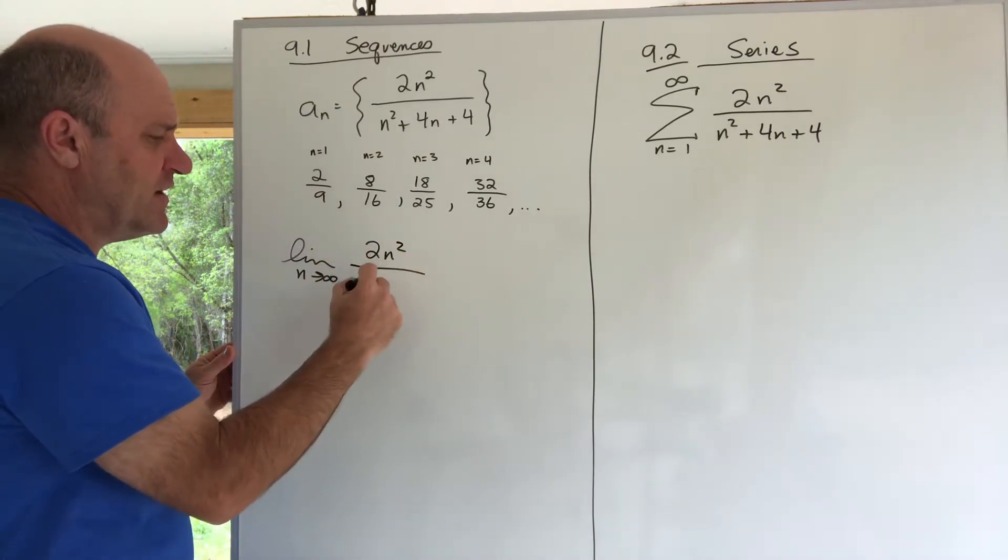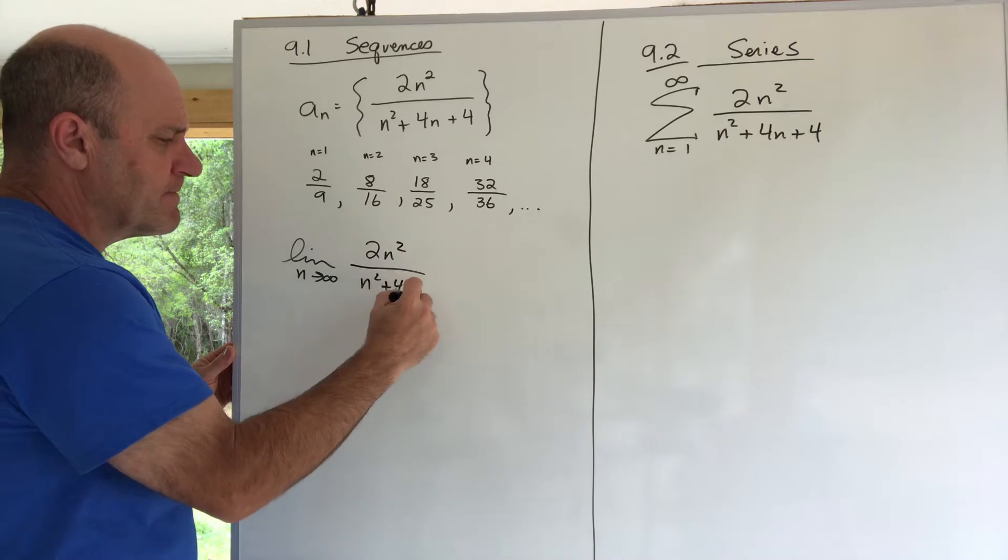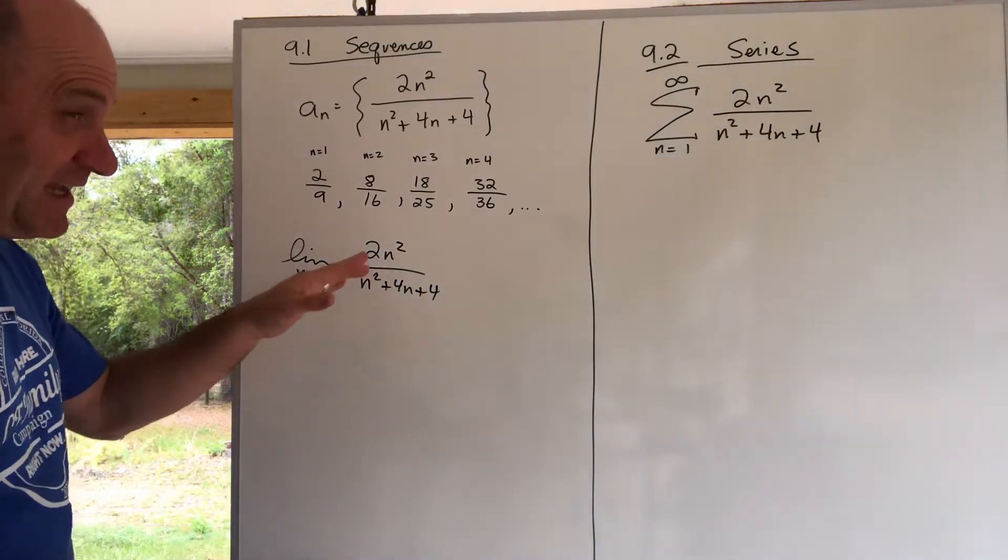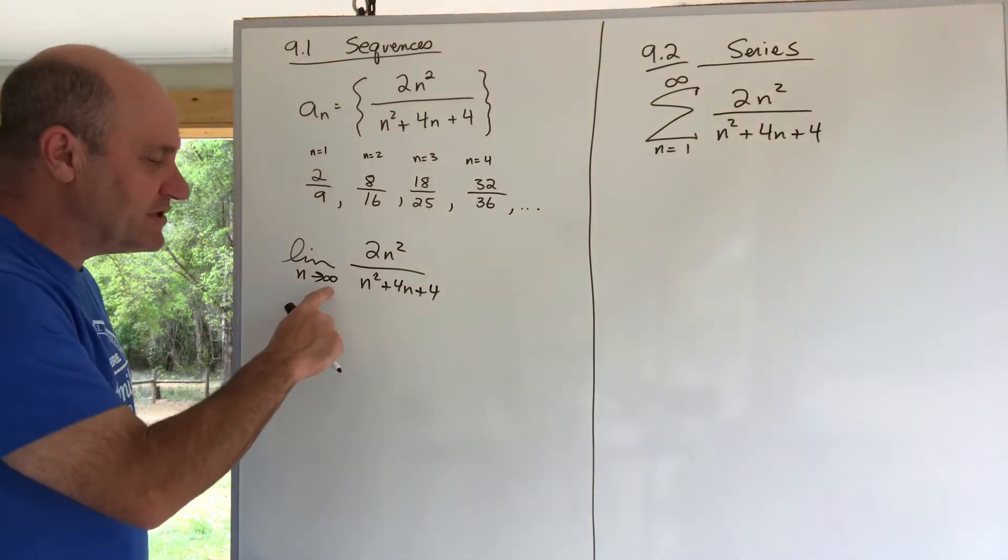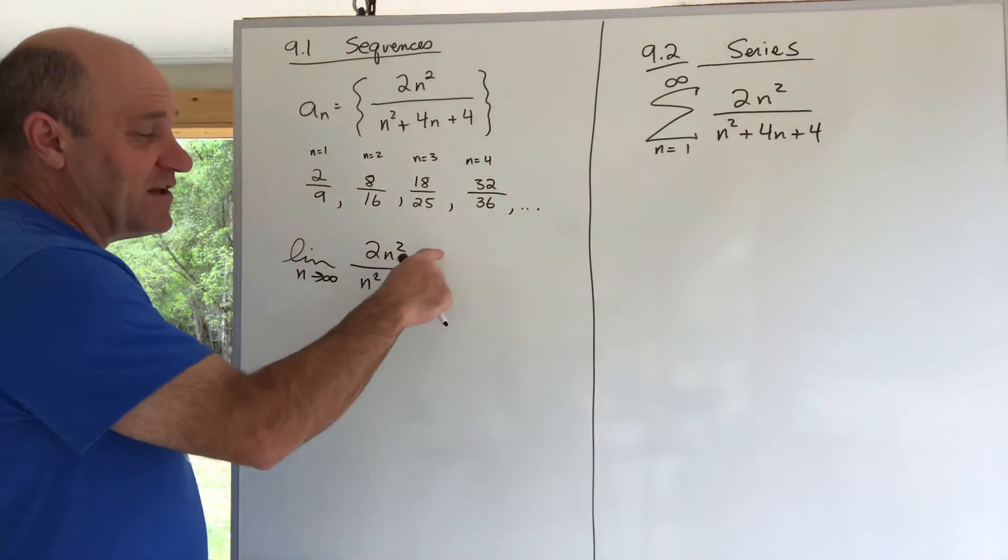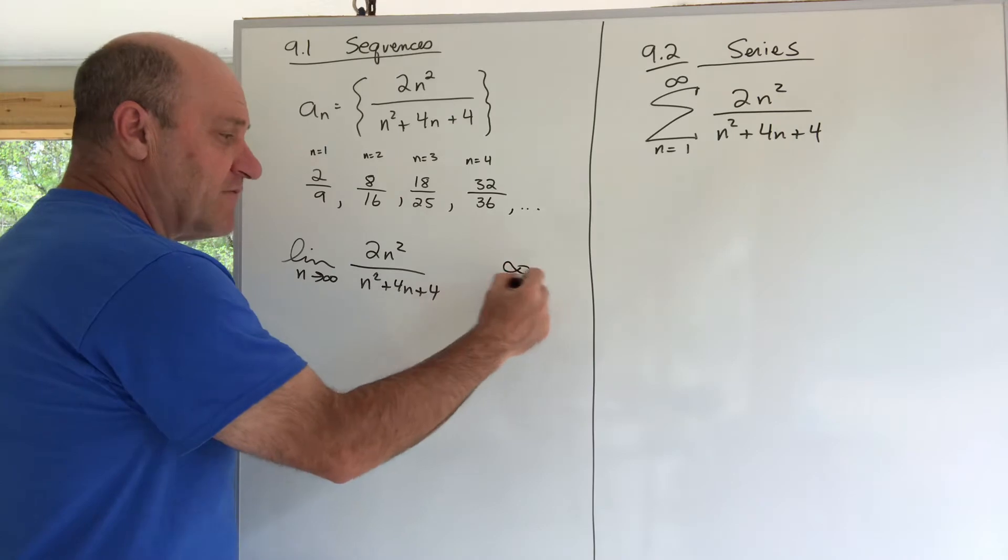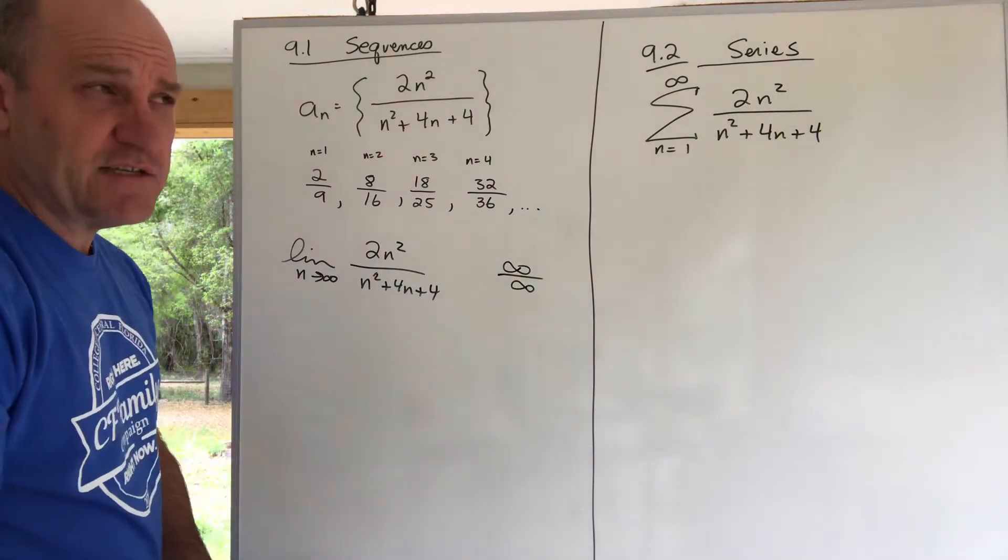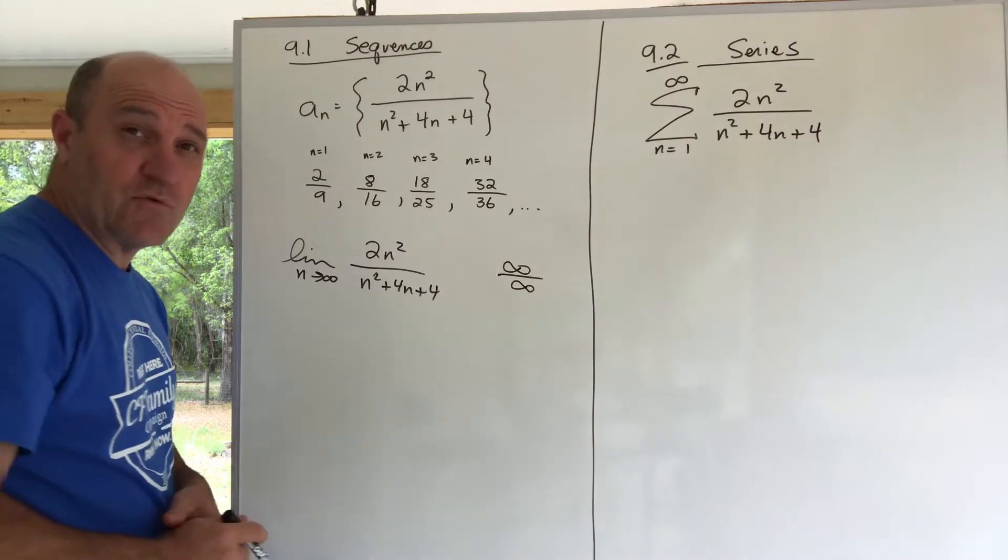Well, it's a pretty easy limit. If I just tried to plug in infinity - which is a little bad language - you get infinity squared in the numerator and infinity in the denominator. So it's an infinity over infinity situation. We could apply L'Hopital's rule, which we learned earlier.